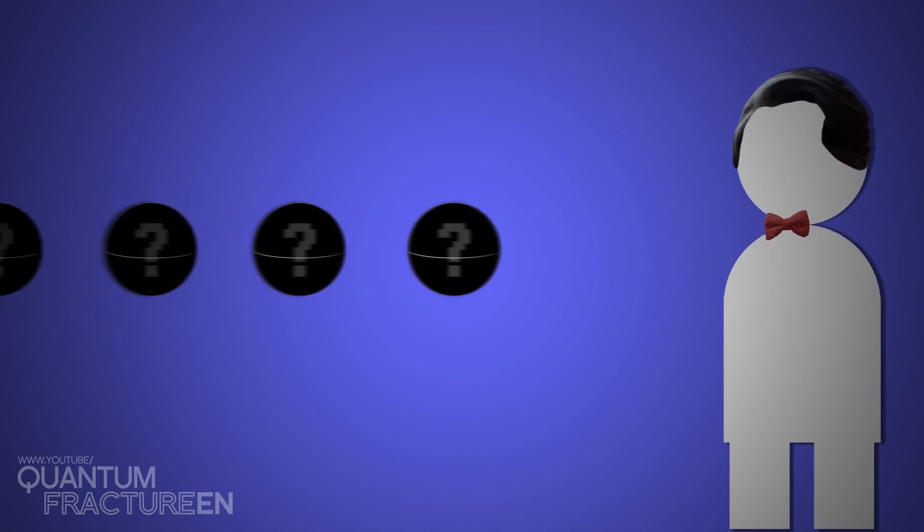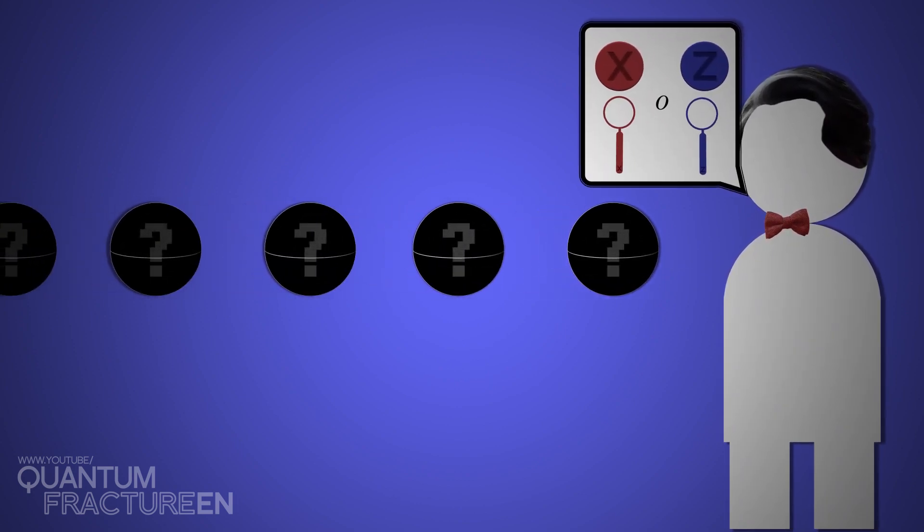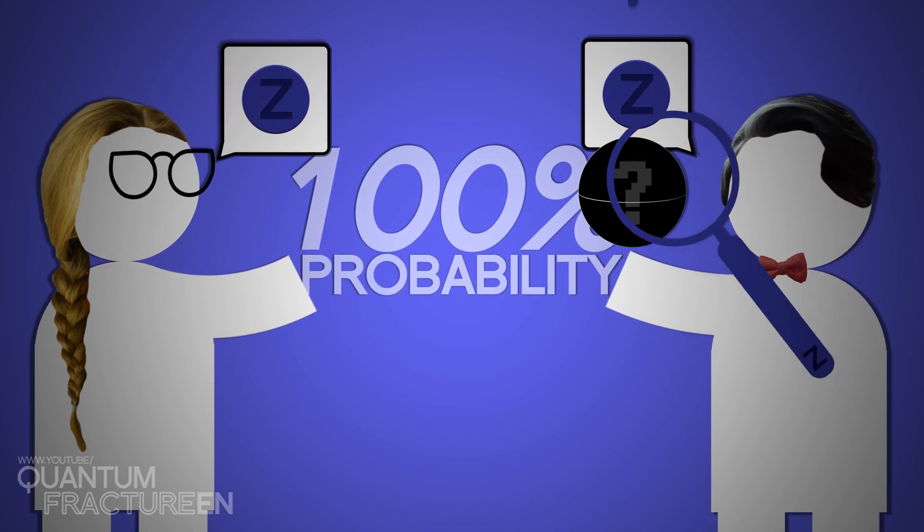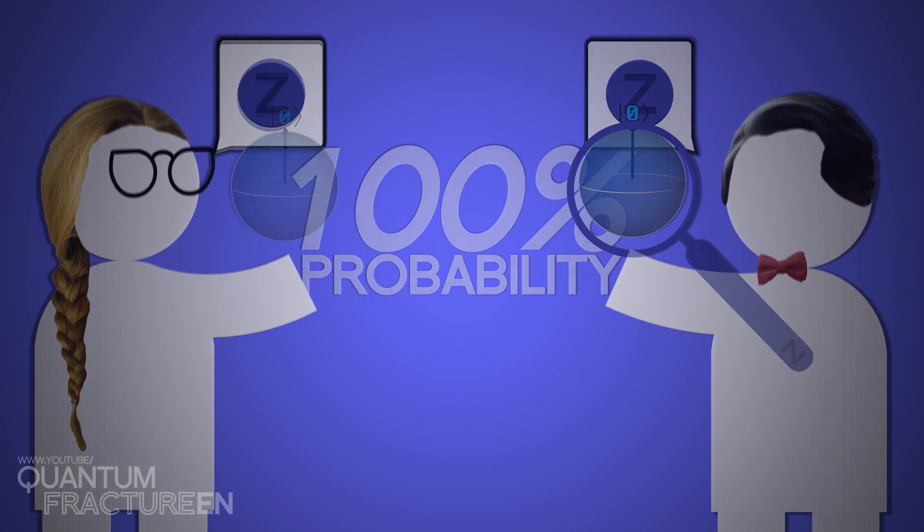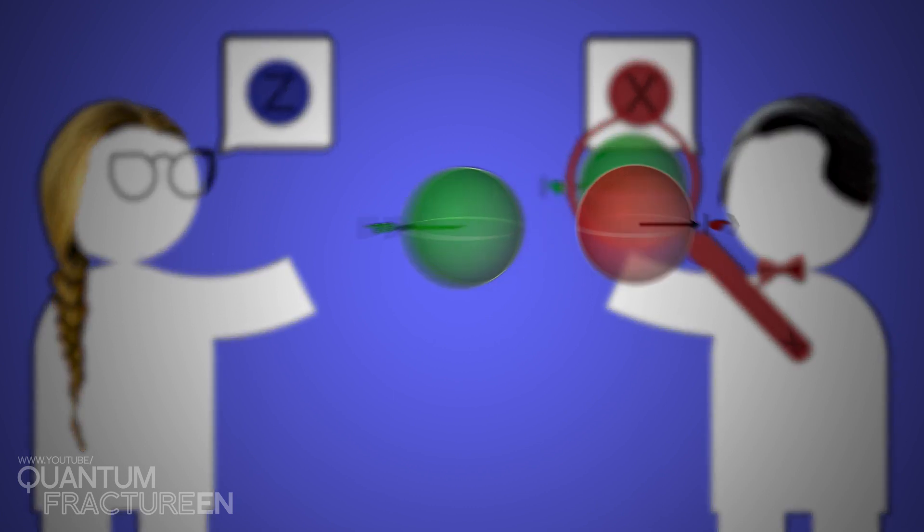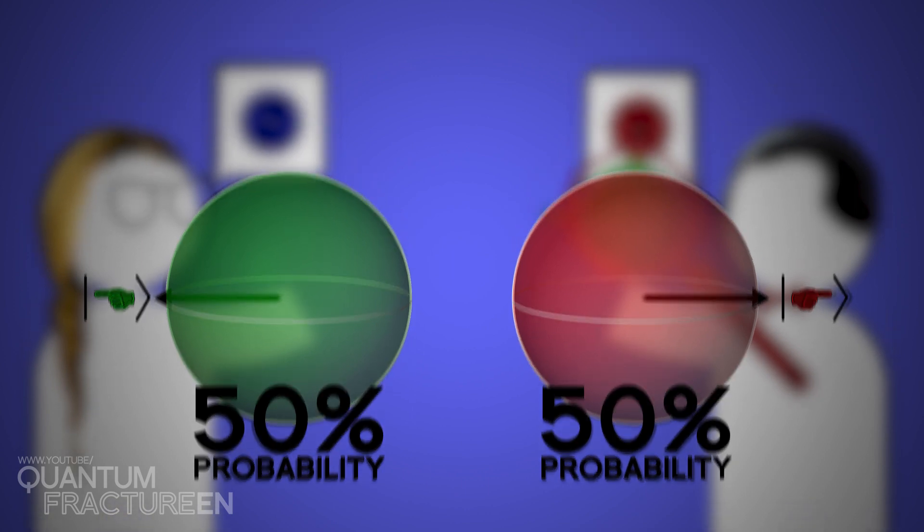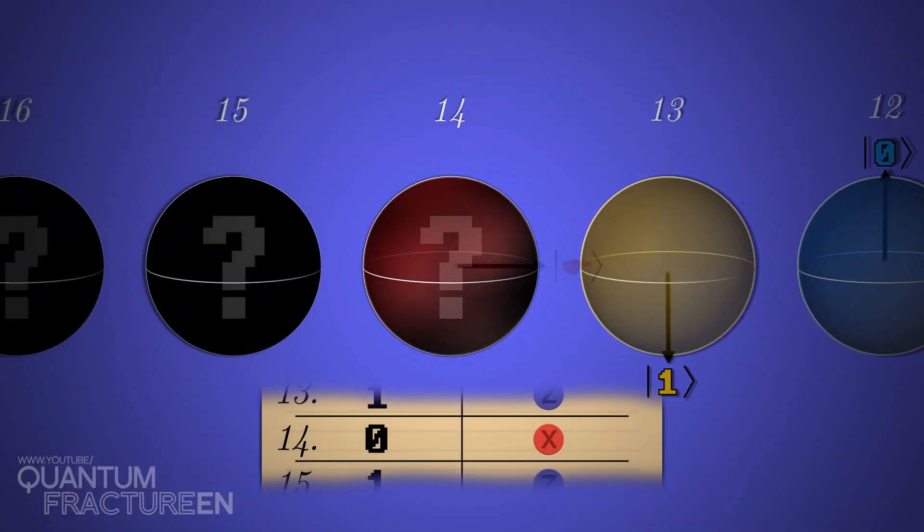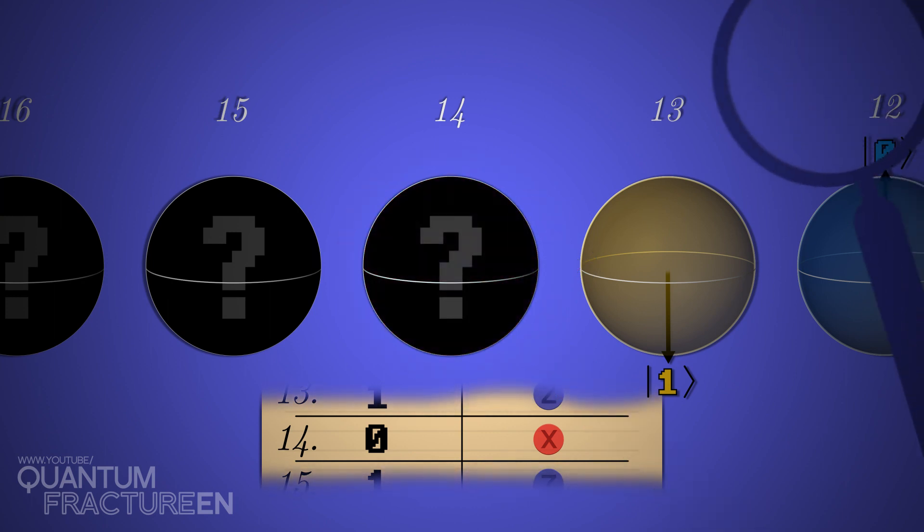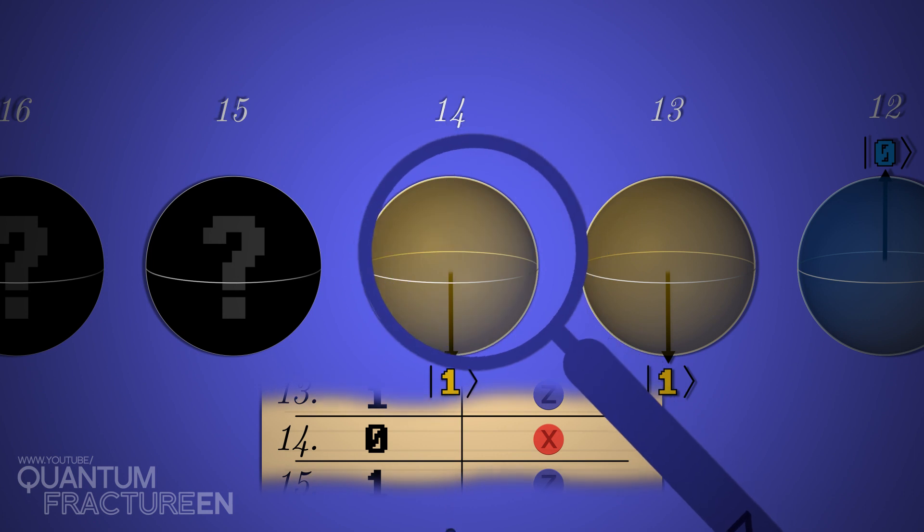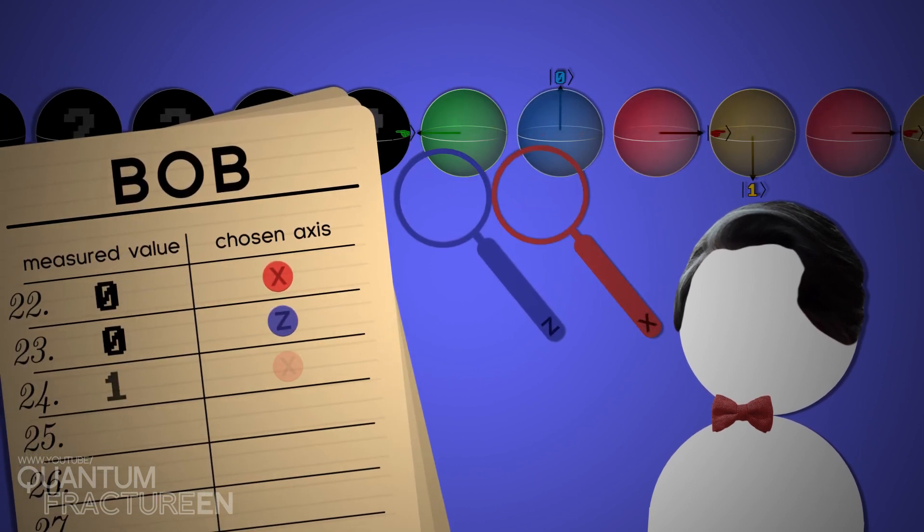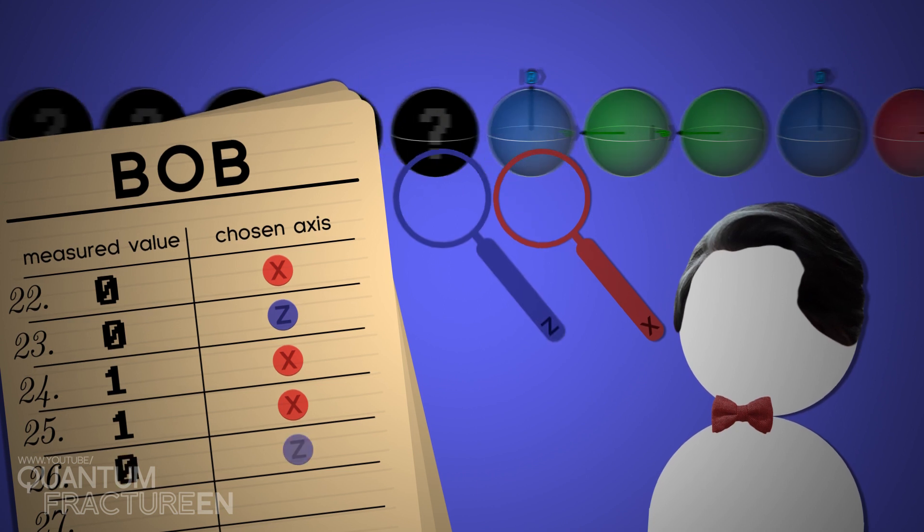Bob takes each qubit that Alice has sent and randomly chooses an axis to measure it, x or z. As you know from the previous video, if Bob measures on the same axis Alice chose, he has a 100% probability of accurately measuring his friend's preparation. However, if he chooses the other axis, the state prepared by Alice will be projected on that axis, destroying it, and the result will be totally random. For example, if Alice prepared that qubit in a right state, in other words on the x-axis, and Bob also decided to measure it on the x-axis, he'll undoubtedly measure right. But if he chooses to measure on the z-axis, the result will be a randomly plotted zero or one. In this way, Bob measures the entire string, jotting down the axis on which he decided to measure each qubit and the result he obtained, without knowing how Alice prepared the qubits.